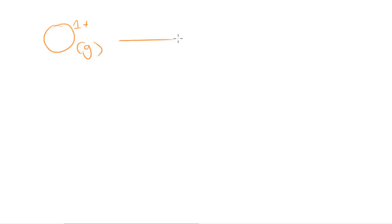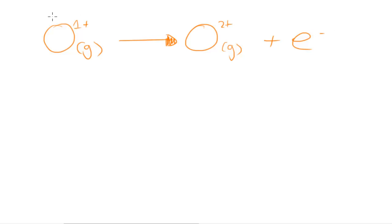So let's say you had oxygen O, and you've already made it into an ion. It's gaseous because you remove them in the gaseous state. Then you want to remove a further electron, so this would become O gaseous and it'd be two plus, since we've removed an extra electron.